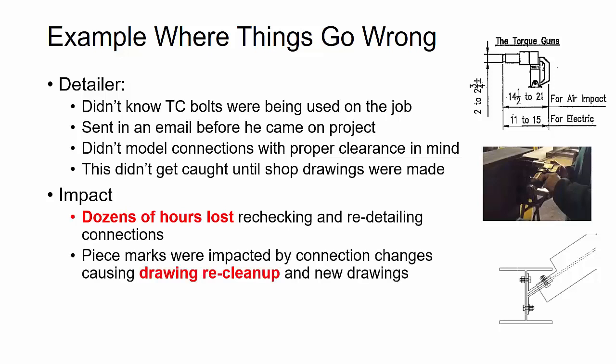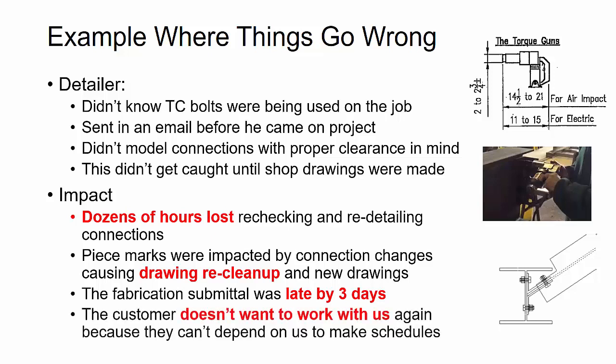What's the impact of not knowing whether to use TC bolts or high-strength bolts? Dozens of hours get lost in rechecking, re-detailing, and updating the model to make sure connections work for TC bolts. Not only are there changes in the model, but piece marks change when you update numbering, causing drawings that were already cleaned up to need re-review. New unexpected drawings get created. The fabrication submittal was late by three days — and if this happens, it can result in back charge impacts and damage to your detailing firm's reputation.